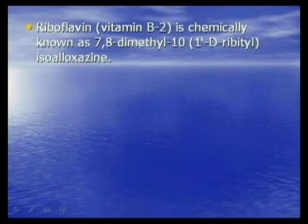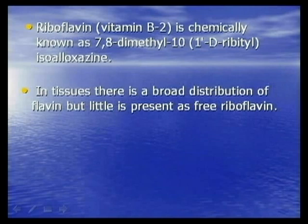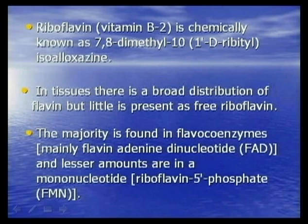Riboflavin, Vitamin B2, is chemically known as 7,8-dimethyl-10 isoalloxazine. In tissues there is a broad distribution of flavin, but little is present as free riboflavin. The majority is found in the flavocoenzyme flavin adenine dinucleotide, FAD.